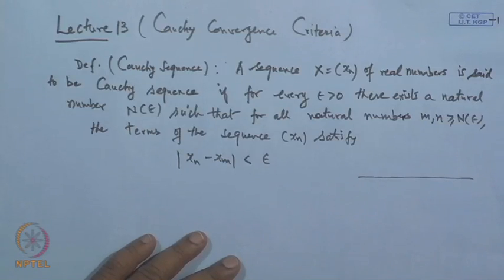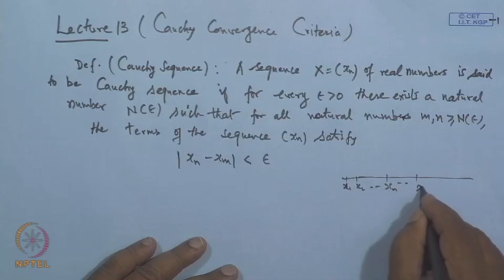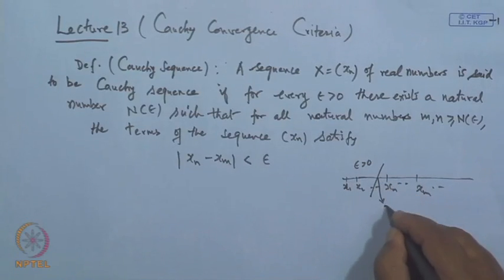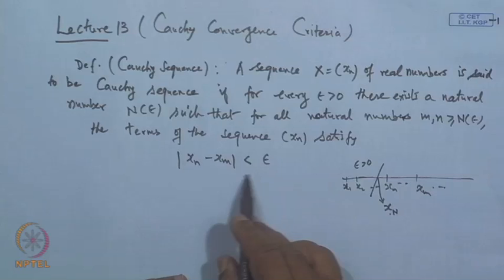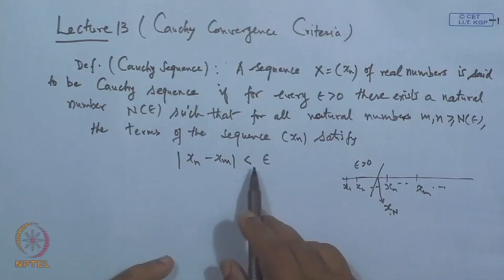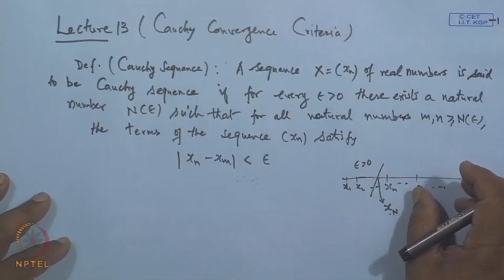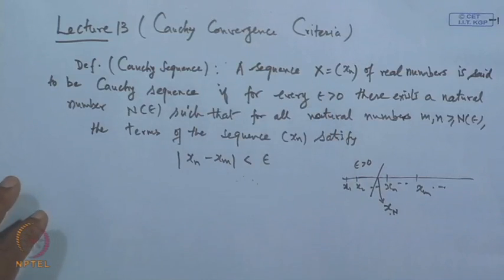It means the sequence is Cauchy if for every epsilon > 0, one can identify a stage N such that for all terms beyond x_N, the difference between any two arbitrary terms remains less than epsilon — they are very close to each other. If this happens, we say the sequence is a Cauchy sequence.